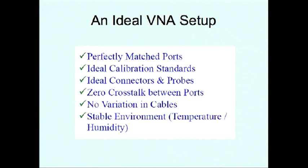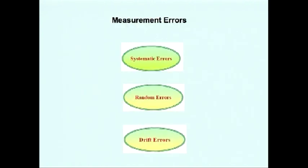An ideal vector network analyzer setup would have perfectly matched ports, ideal calibration standards, ideal connectors and probes, zero crosstalk between ports, no variation in cables, and will have a stable environment. However, practically speaking, there are always some kinds of errors that develop while conducting measurements. There are three different types of measurement errors: systematic errors, random errors, and drift errors.